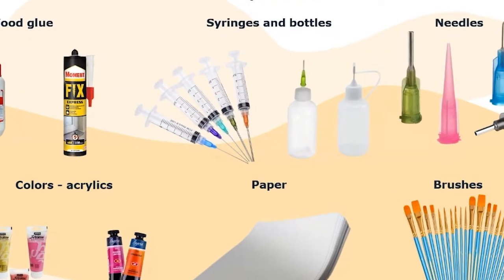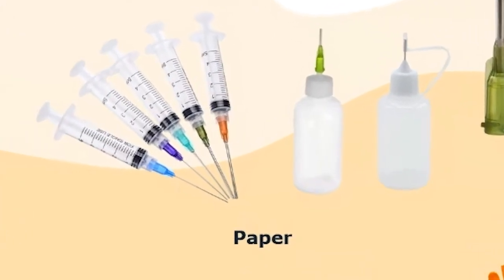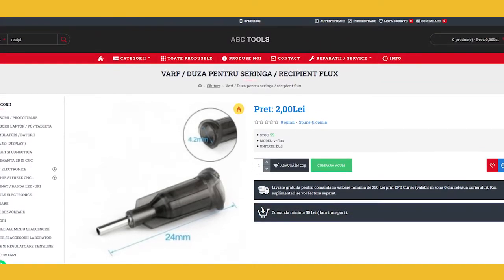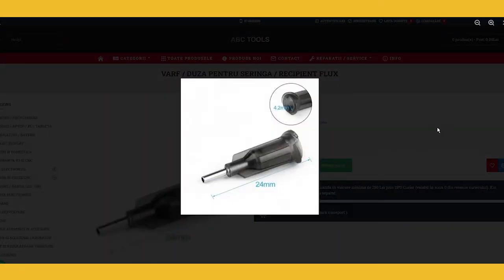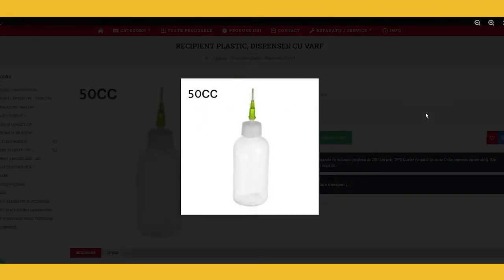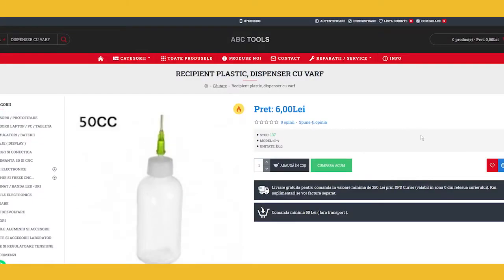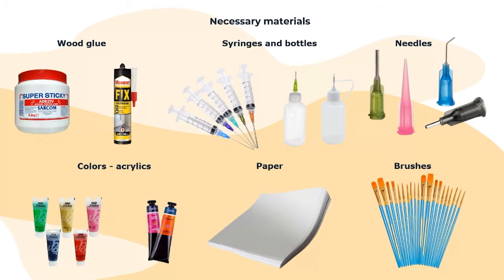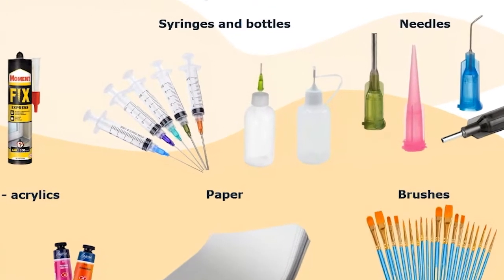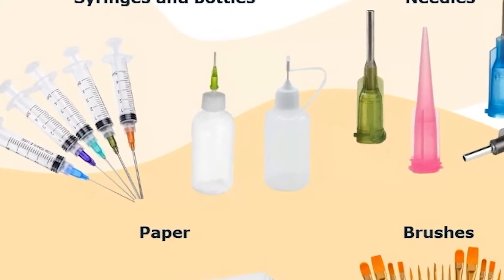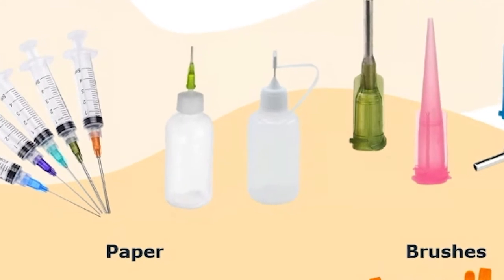To apply this thin layer of glue, we use a syringe with different needles of different sizes to get different thicknesses of line. Or we prefer the small bottles — there's a bottle with a fixed needle on the right, or on the left, the green one, which is a bottle with an interchangeable needle so you can swap needles depending on the size of line you want to draw.